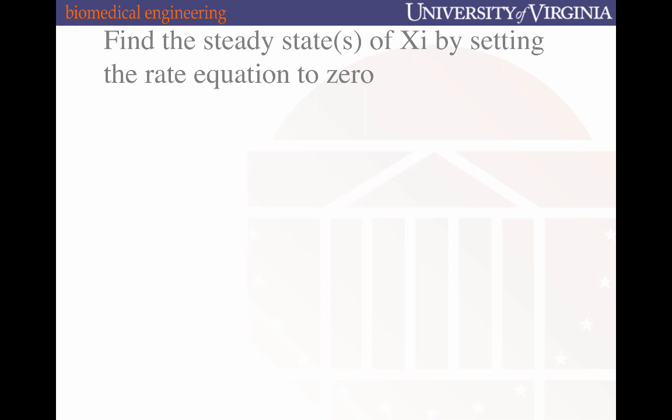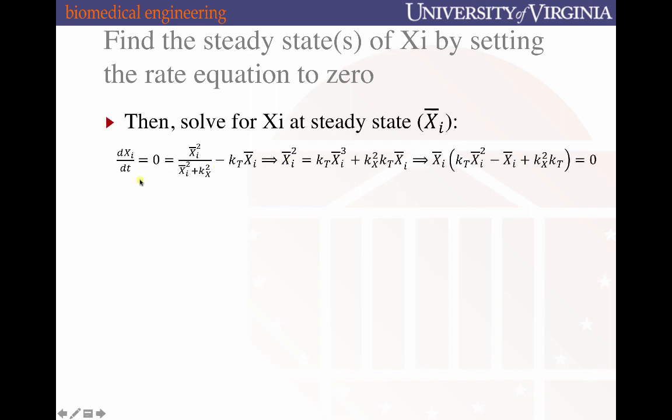To examine the outcomes of the rate equation that I just introduced, we need to solve for the steady state or steady states of the variable Xi, which is easily done by setting that rate equation to 0. If we set dXi/dt to 0, we then can solve for Xi at the steady state, which I annotate here as X-bar sub i. After this, it's simply algebra reconfiguring the equation to arrive at a polynomial that's set next to 0 for which we can solve the roots.